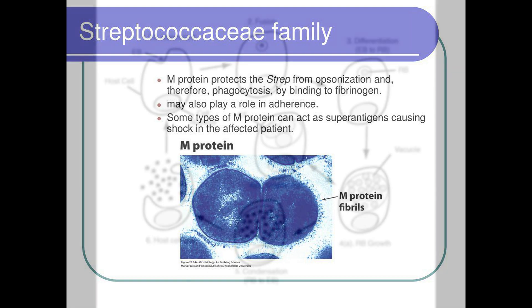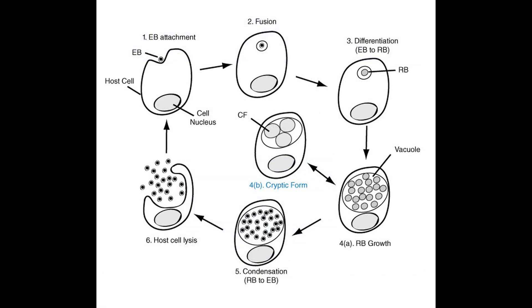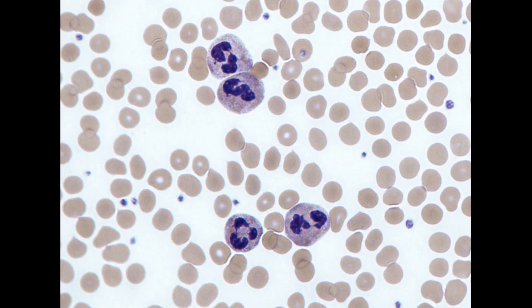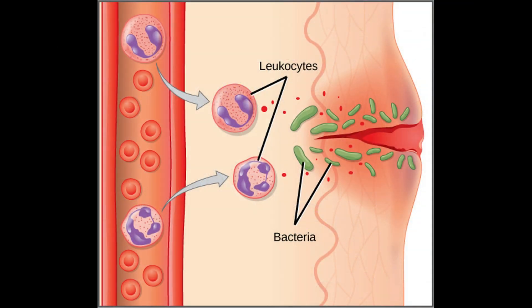The state of the bacteria up until this point is considered an elementary body, or EB for short. The EB pathogen undergoes fusion into the host cell and can then be differentiated into a reticulate body, or RB for short. Streptococcus pyogenes has a protease involved in this mechanism that can clone the pathogen's gene and make it resistant to neutrophils. It blocks the site of interleukin activation so that no signal can be sent for neutrophils to clear the infection, making the bacteria even more viable.